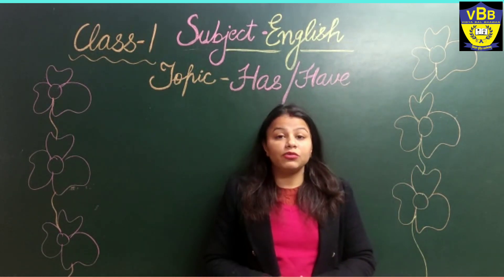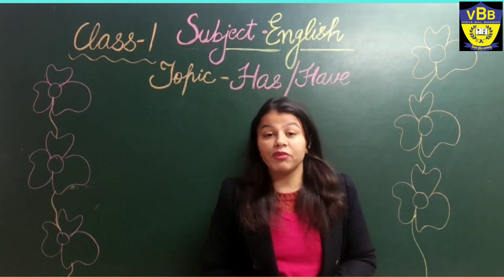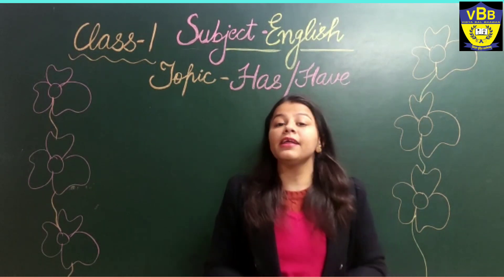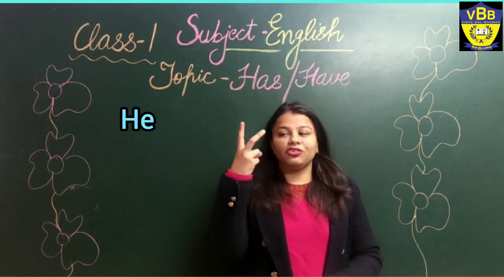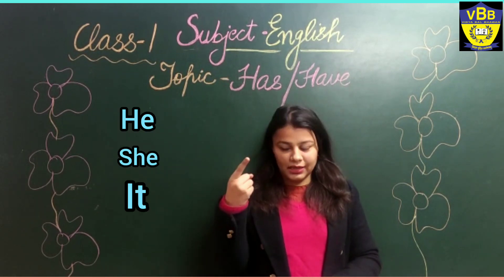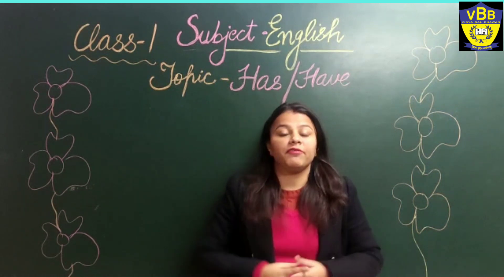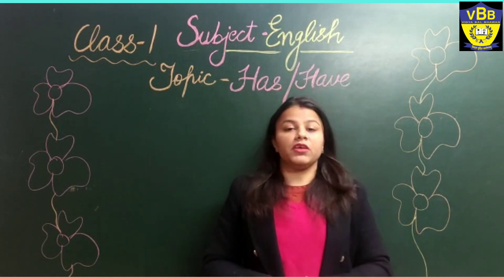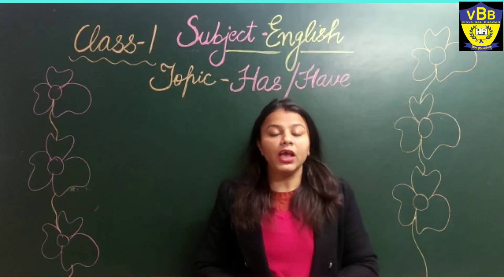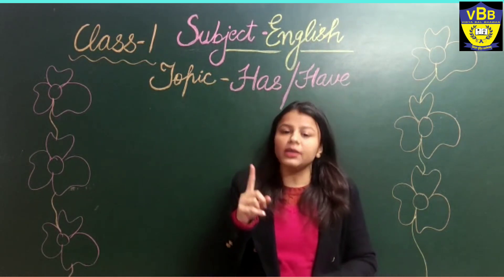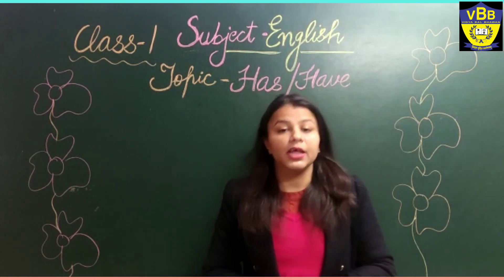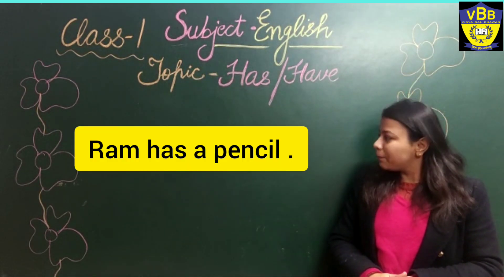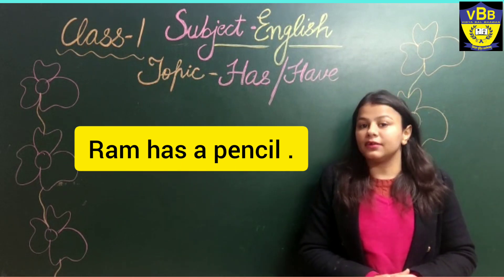Who all are the friends of has? There are three friends of has: he, she, it. When we are talking about only one person, one thing, or one animal, then we will use has. For example, Ram has a pencil. Here we are talking about only one person, Ram, that is why we have used has.